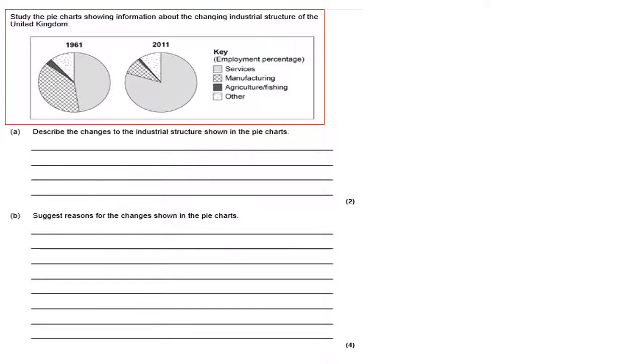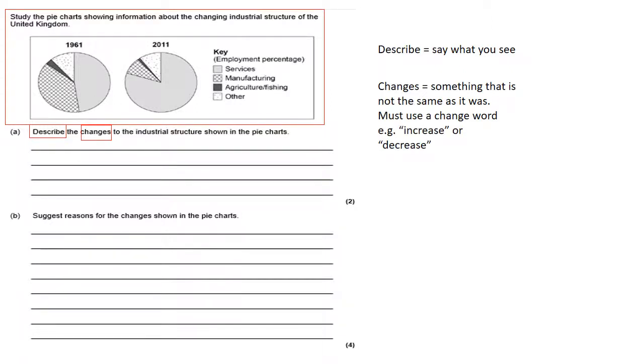showing information about the changing industrial structure of the United Kingdom. Now, one thing to mention here in geography is, if you get to a question and you read that and go, changing industrial structure, oh, this looks confusing, I don't know what I'm doing, just don't panic. Just look at the pie charts. It's literally telling you the answer every time it gives you a graph or a photo, for that matter. So let's see what we've got to do on this one. Describe, the command word, which means say what you see. Changes means something that isn't what it was before. Now, on a change question, please, please, please use a change word. It sounds obvious, but if you don't do it, the examiner can say that you have not identified a change. So increase or decrease would be the ones to be using here.